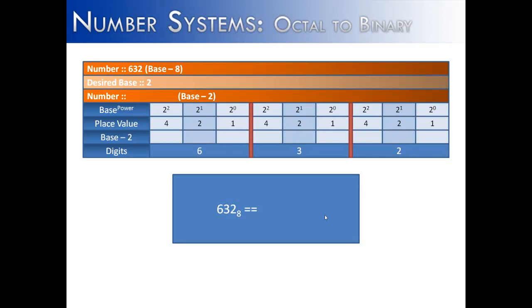And then we ask ourselves, what digit goes into the number without going over? In this case, 2. We place a 1 there, put zeros in the other spot. 3, we're going to use the 2 and 1. And so we have two ones there. We add a 0. And then 6, we put ones beneath the 4 and 2 and add a 0. So therefore, 6, 3, 2 in base 8 is 1, 1, 0, 0, 1, 1, 0, 1, 0 in base 2.